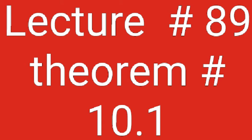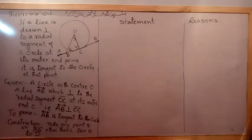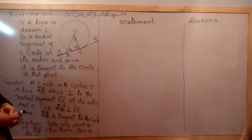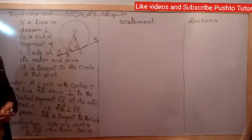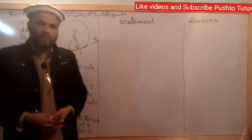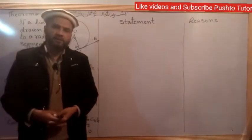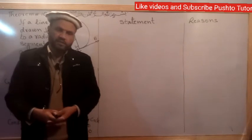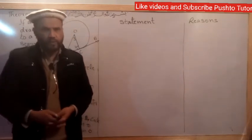Auzubillahi minash shaytwanur rajim, bismillahirrahmanirrahim. The 10th class meets the lecture of Theorem 10.1 proof. The theorem states: if a line is drawn perpendicular to a radial segment of a circle at its outer end, it is tangent to the circle at that point.